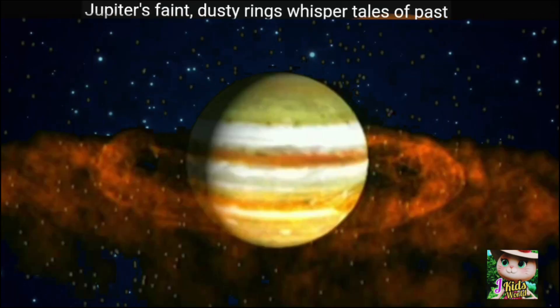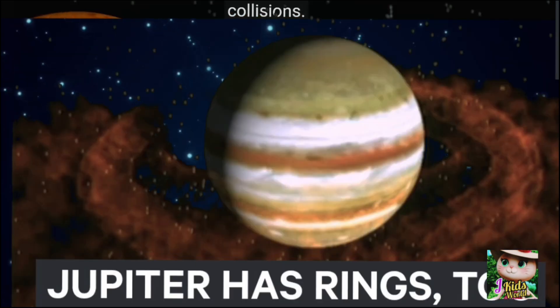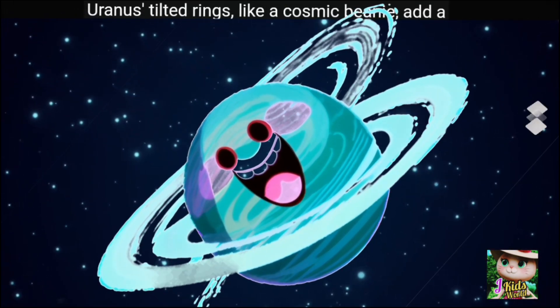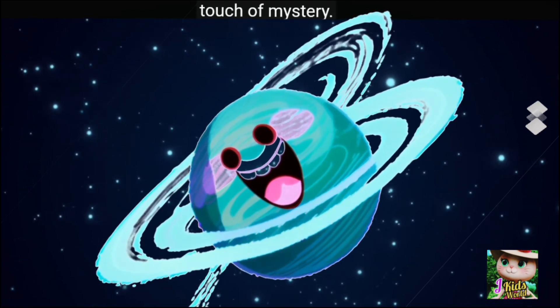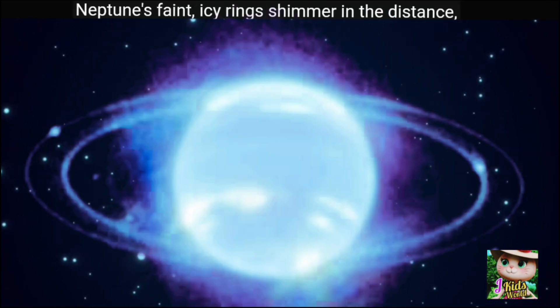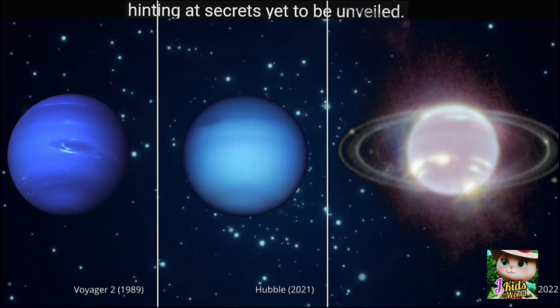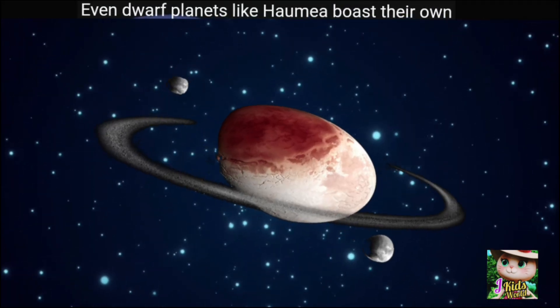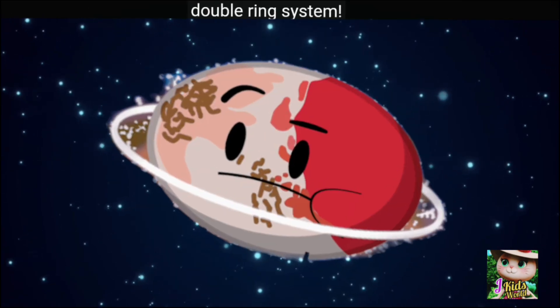Jupiter's faint, dusty rings whisper tales of past collisions. Uranus' tilted rings, like a cosmic beanie, add a touch of mystery. Neptune's faint, icy rings shimmer in the distance, hinting at secrets yet to be unveiled. Even dwarf planets like Haumea boast their own double ring system.